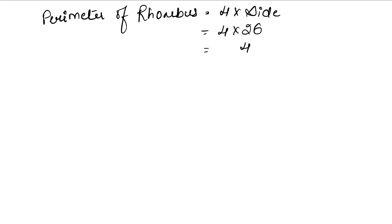4 × 26 = 104 cm. So the perimeter of the rhombus is 104 cm. That is the final answer.